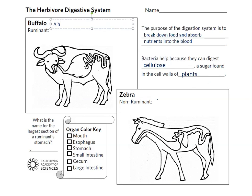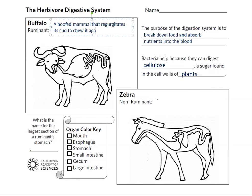A buffalo is called a ruminant, which means that it continually chews, swallows, and regurgitates its cud or wad of food. This food or cud travels down to the largest part of its four-chambered stomach, which is called the rumen, and that's why these animals are called ruminants.